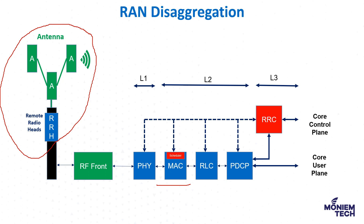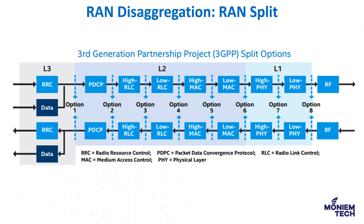Here we will see transport terms like fronthaul and midhaul, which we will discuss in the next slide. 3GPP has defined eight functional split options for fronthaul networks in technical report specification 38.801.